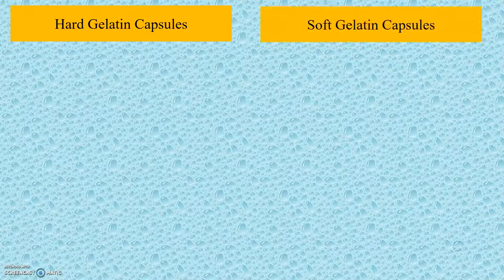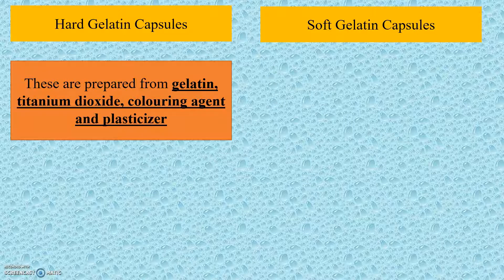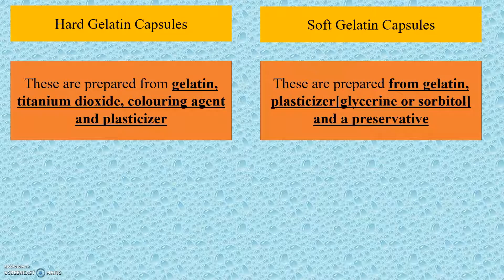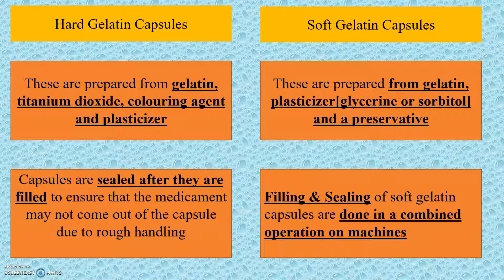The hard gelatin capsules are prepared from gelatin, titanium dioxide, coloring agent, and plasticizers. Whereas soft gelatin capsules are prepared from gelatin, a plasticizer which may be glycerin or sorbitol, and a preservative. In hard gelatin capsules, the capsules are sealed after they are filled to ensure that the medicament may not come out due to rough handling. Whereas in soft gelatin capsules, the filling and sealing are done in a combined operation on machines.